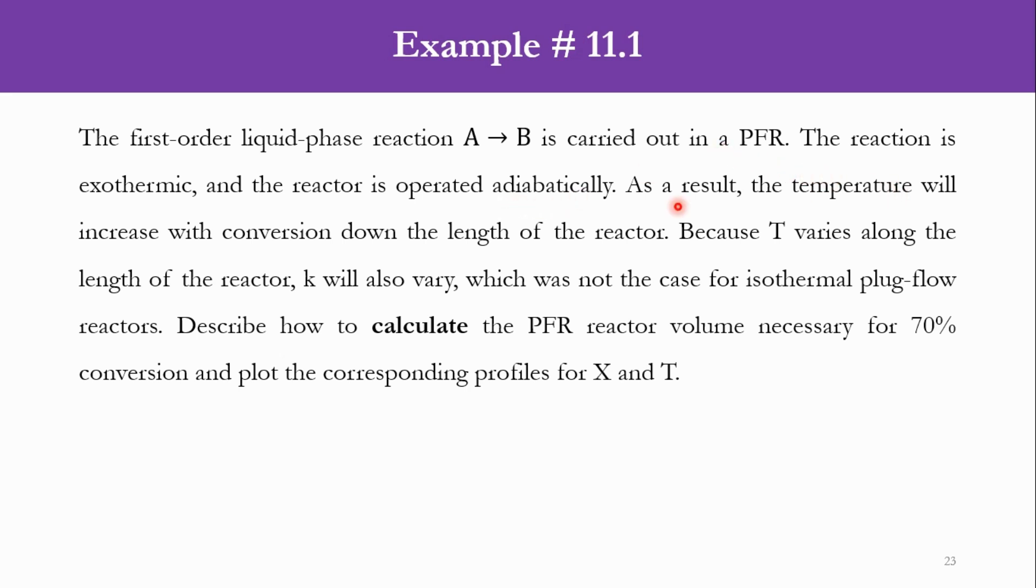As a result, the temperature will increase with conversion down the length of the reactor. As we move along the length, conversion increases, but now temperature also varies. For example, in a 10-meter reactor, at 1 meter the temperature and conversion will be different, at 2 meters they will be different, and so on—at each point both conversion and temperature will be different.